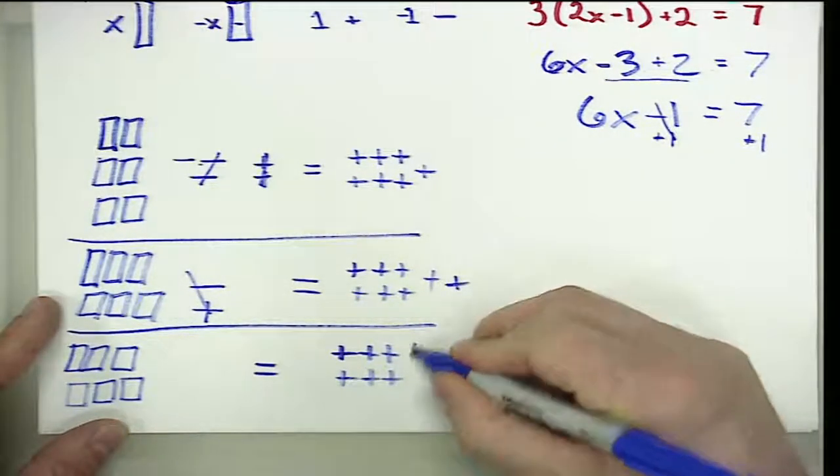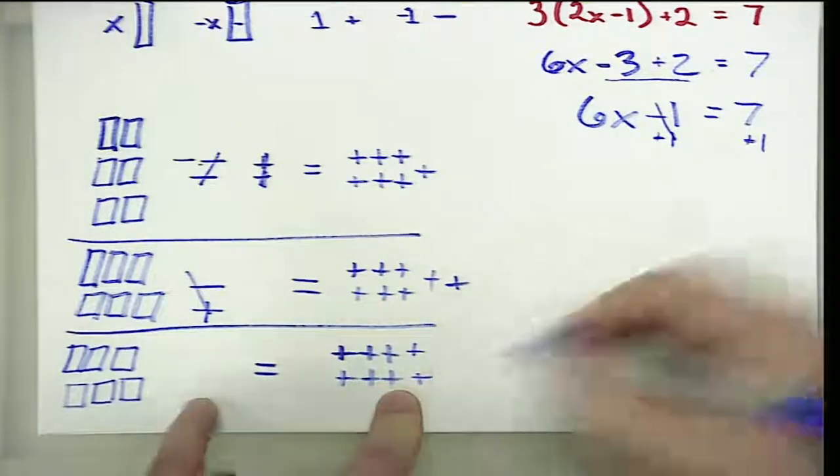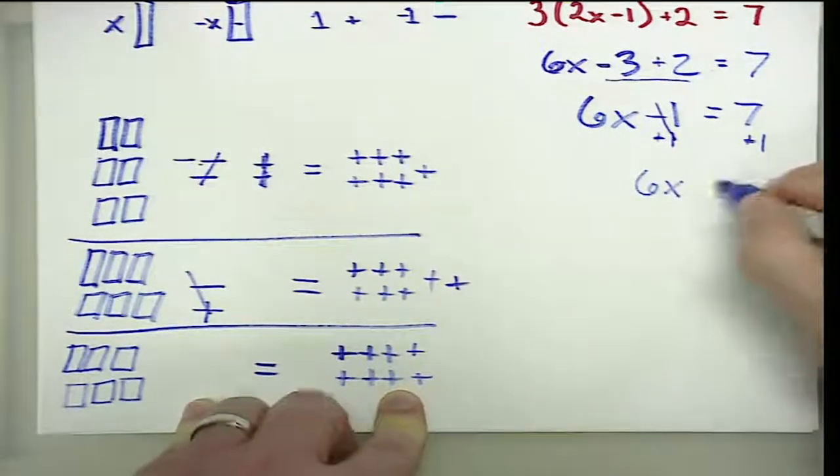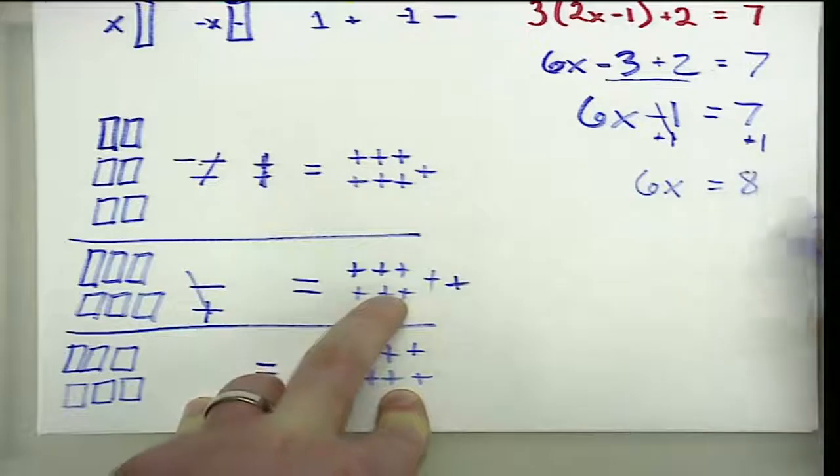Over here we just ended up with more positives - in this case eight positives. So we have 6X is equal to eight positives.